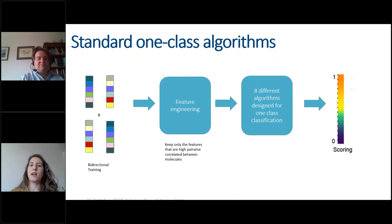The standard one-class algorithms we used eight different algorithms that each one of them has a different concept. Some are tree-based, some other are the one-class SVM or auto encoders. The feature engineering was performed based on the correlations between the features of the molecules. We tried to select only the features that are highly correlated among the molecular pairs. And we also tried to train our models in a bidirectional way so that it will understand that either if you have molecule one and molecule two or molecule two and molecule one it will be the same thing because they are order invariant, the pairs. And at the end we get a scoring from zero to one according to how good a combination might be.